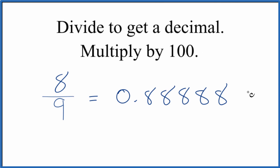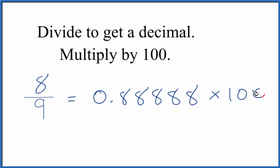So we multiply that by 100. We end up with 88.8, and let's just round that to 88.89%. So the fraction eight ninths is equal to 88.89%.